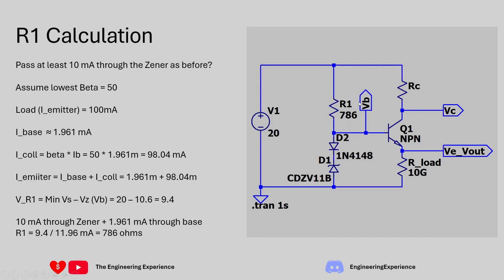We can calculate the voltage across R1 using the minimum power supply minus 10.6 volts: 20 minus 10.6 gives 9.4 volts across R1. Using Ohm's law, 9.4 volts divided by 11.96 milliamps gives a resistance of 786 ohms for R1. This is approximate because beta is never fully consistent for a transistor, but this guarantees close to the minimum current requested.